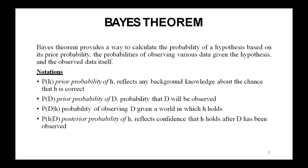More precisely, the Bayes theorem provides a way to calculate the probability of a hypothesis based on its prior probability, the probabilities of observing various data given the hypothesis, and the observed data itself.